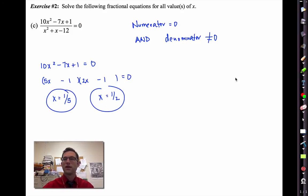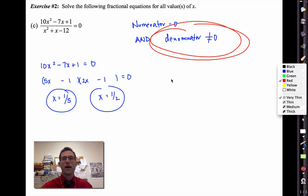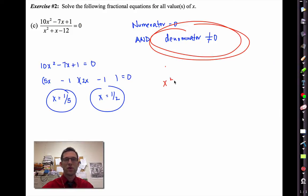Now the only question is, would either one of those make the denominator 0? We have to be very wary about that. Whenever we're solving a fractional equation set equal to 0, we want to make sure that none of the answers that we get will make the denominator equal to 0.